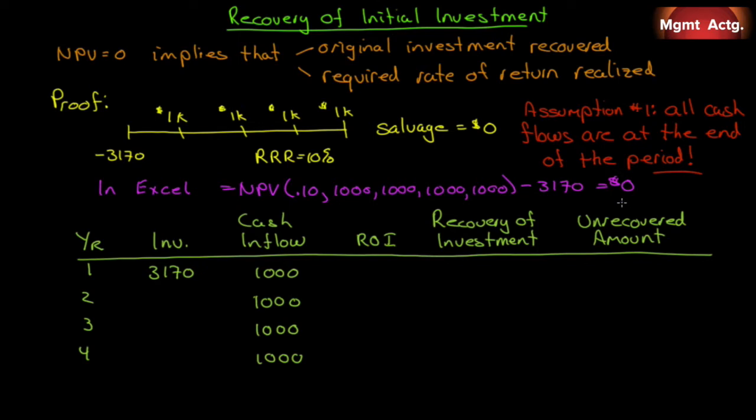I'm taking a bit of time on this, and the book takes some time on it too, because we get so used to looking at zero and saying it's nothing that we forget that embedded within that zero is our required rate of return.